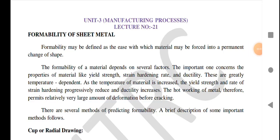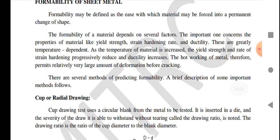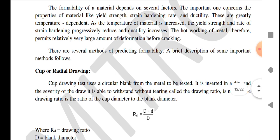Welcome students. Today our topic is formability of sheet metal. Formability may be defined as the ease with which a material may be forced into permanent change of shape. The formability of a material depends on several factors; the important ones concern material properties like yield strength, strain hardening rate, and ductility. These are greatly temperature-dependent. As the temperature of metal is increased, yield strength and the rate of strain hardening progressively reduce and ductility increases. Hot working of metal therefore permits relatively large amounts of deformation before cracking.